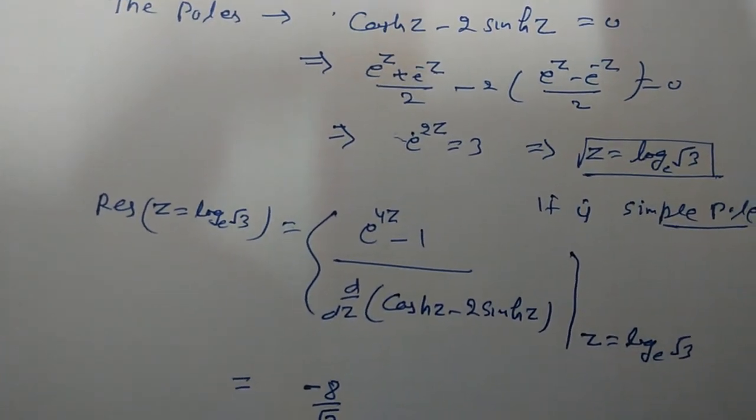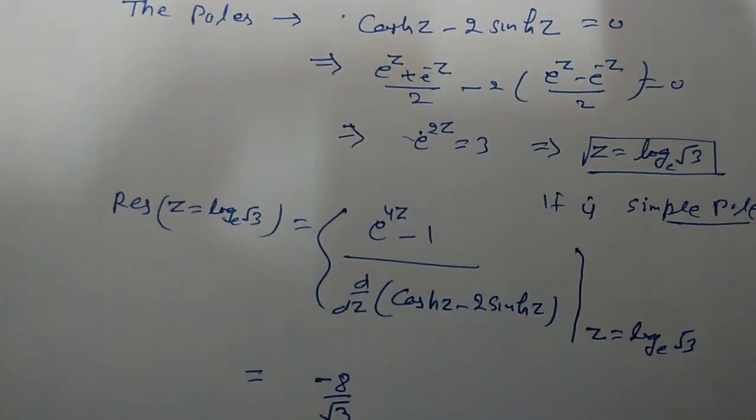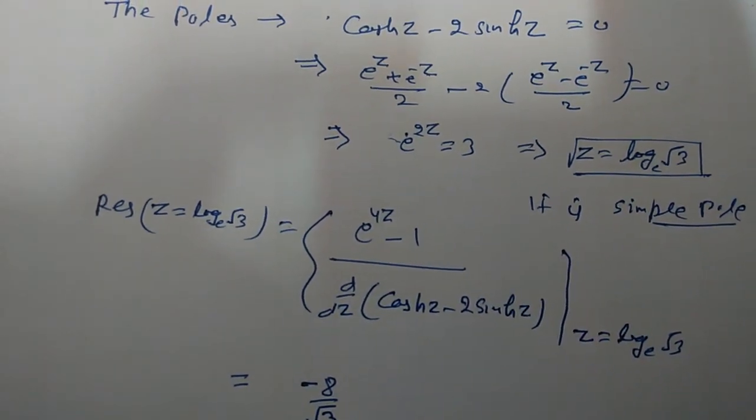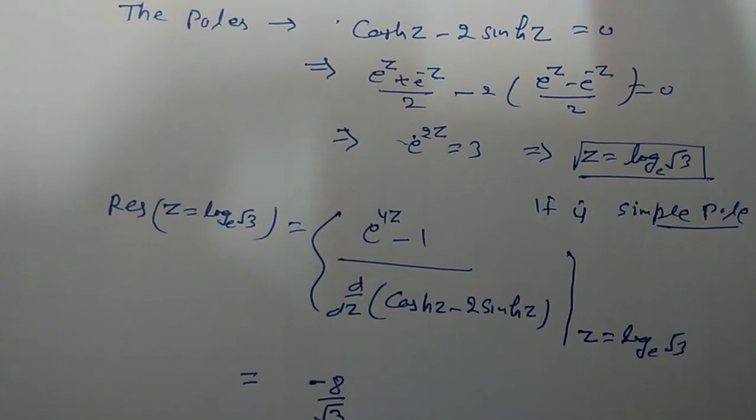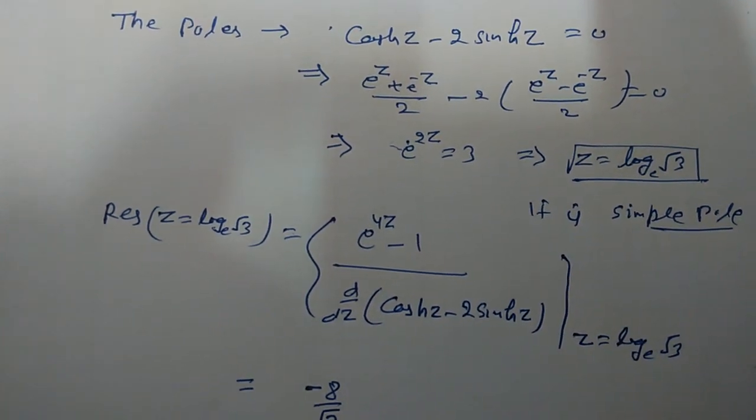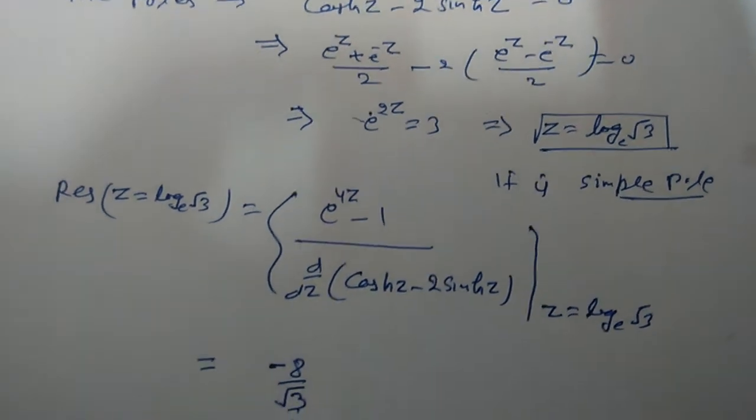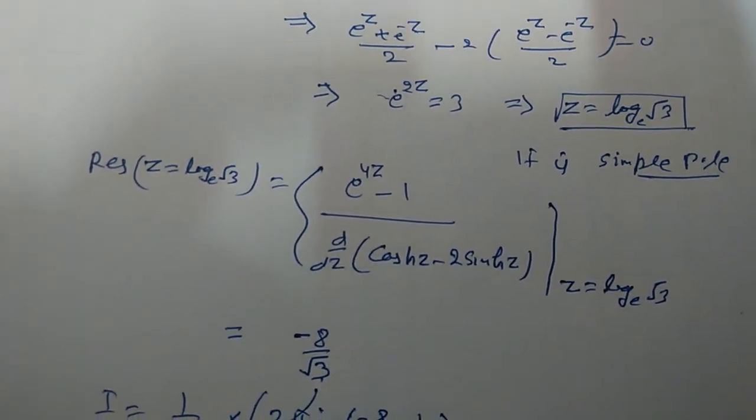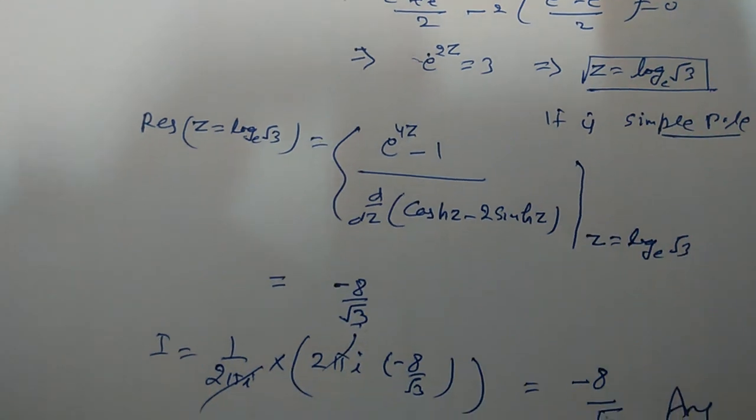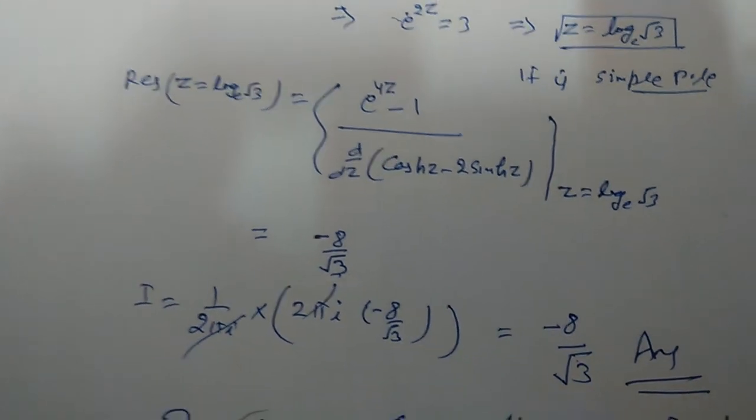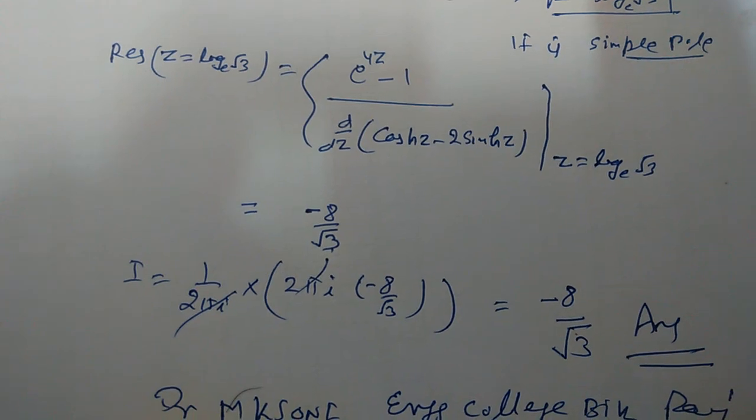We differentiate the denominator: d/dz(cosh z - 2 sinh z) = sinh z - 2 cosh z. After calculation, we put z = log√3. We get I = 8 / (-8/√3).